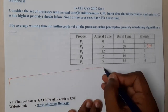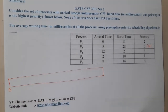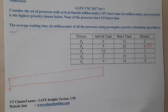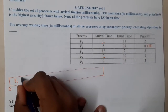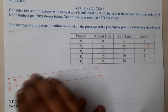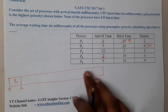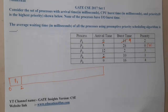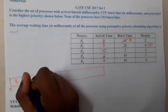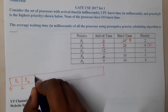At 0th millisecond, only one process is inside — P1 — so P1 will start its execution. At time 2, P4 arrives. The priority of P4 is 1, which is high, so P4 will preempt and get a chance for execution up to 5 milliseconds.